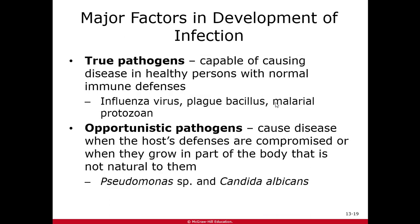Some organisms are more likely to cause disease — we call them true pathogens. A true pathogen can cause disease in even the healthiest person. Examples include the flu, the bacteria that causes plague, and malaria. Opportunistic pathogens are organisms that cause disease sometimes if you're immunocompromised — if you don't have a working immune system.